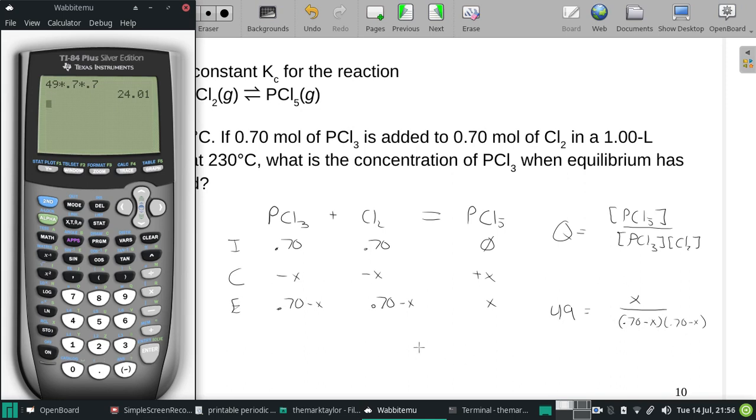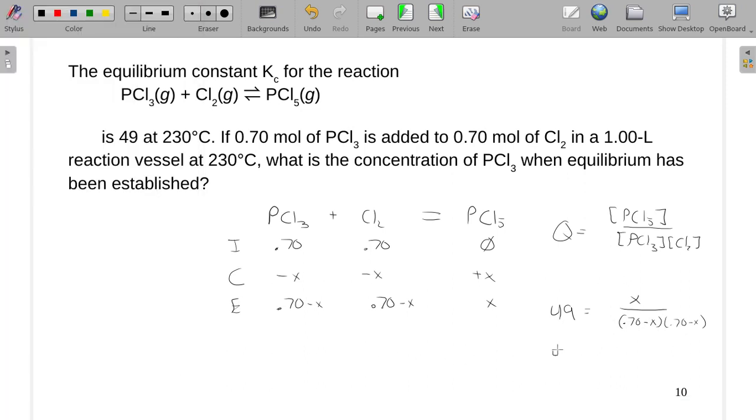So I am going to go ahead and move the 0.7 minus X's to one side so it's a nice flat equation. And then I'm going to work these things in. I'm going to do the foil part.